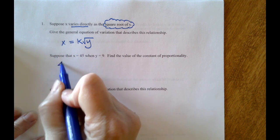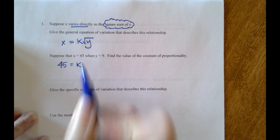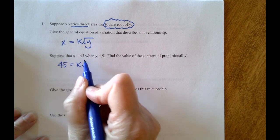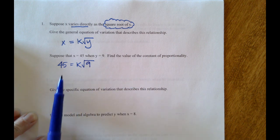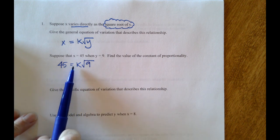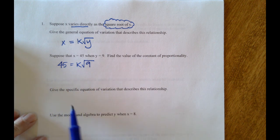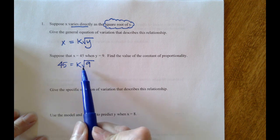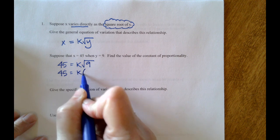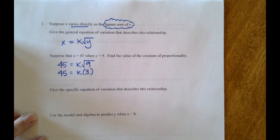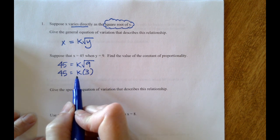So x gets replaced with 45, k is just k for right now, y gets replaced with 9. We get a statement: 45 equals k times the square root of 9. And then we start to work on this. The square root of 9 is 3.